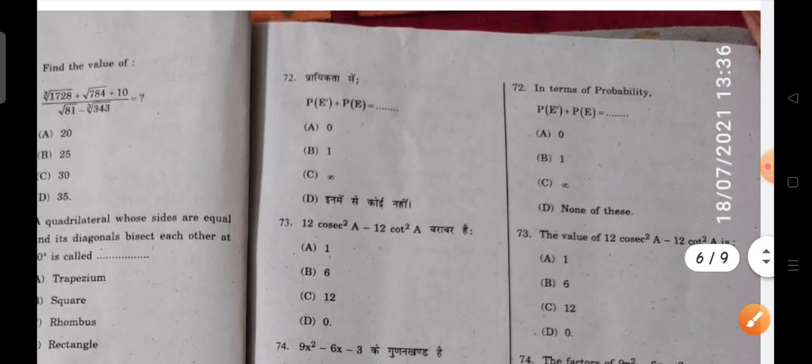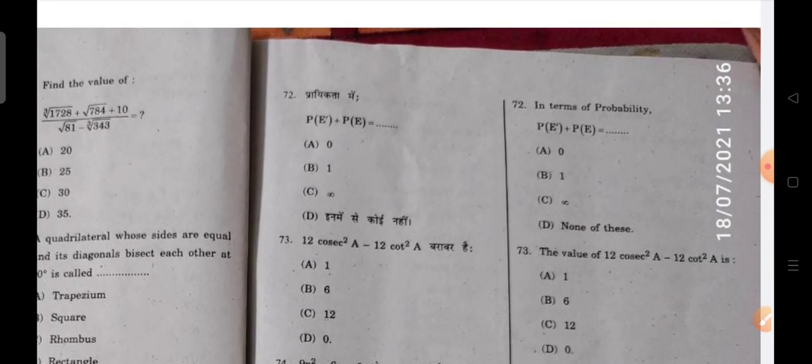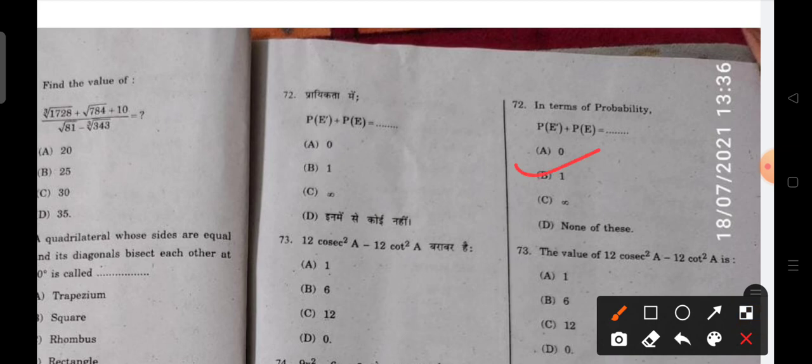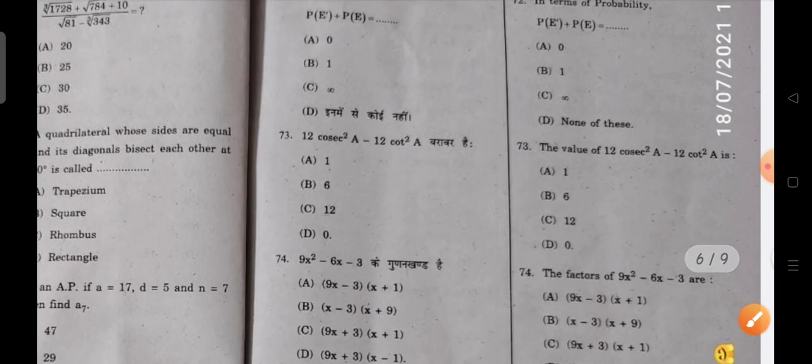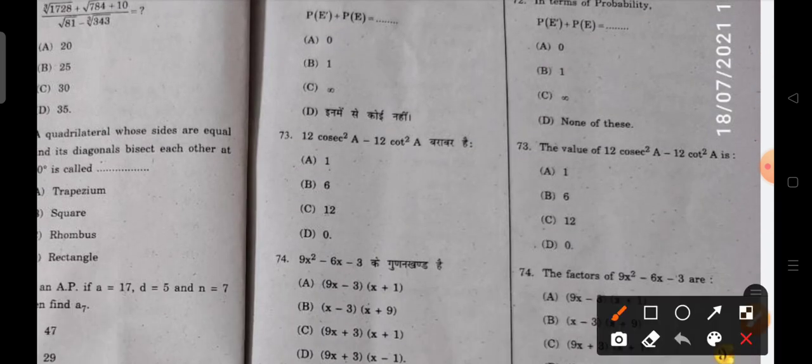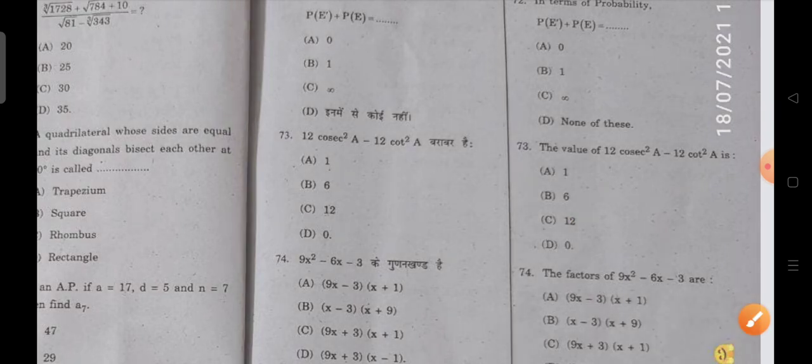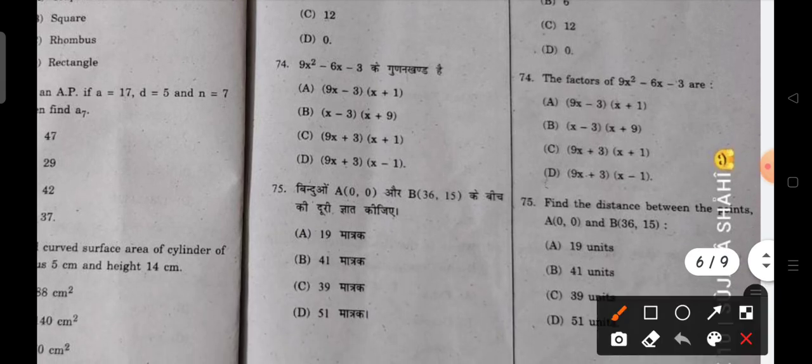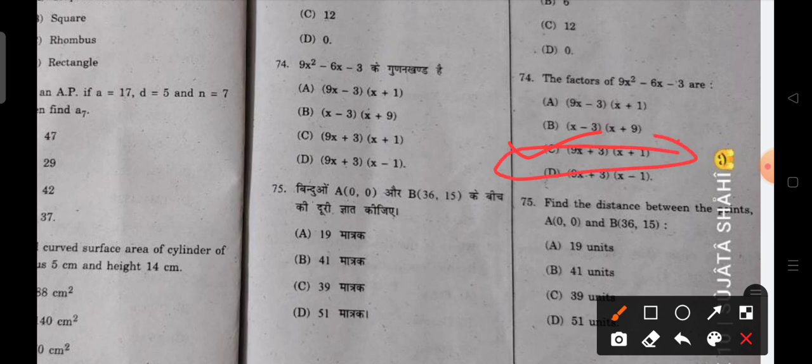Next is in terms of probability, you will find the probability, 1 is the correct answer. Next, the value of 12 cos squared A minus 12 cos squared A, that is the correct answer C. Next, you have to show the factors. When you solve it by splitting the middle term, the answer is 9x plus 3, x plus 1 will be the correct answer.